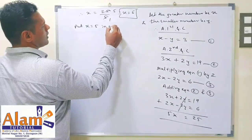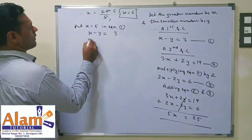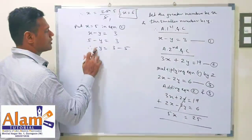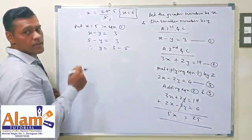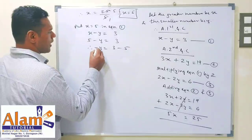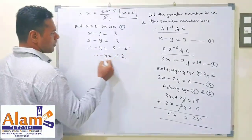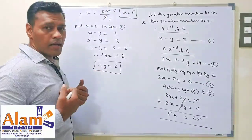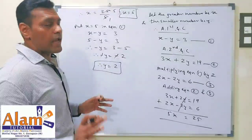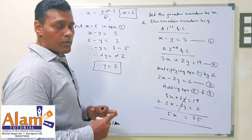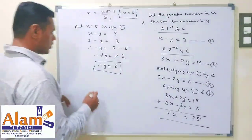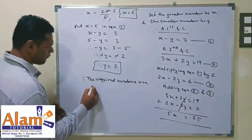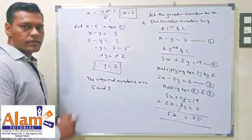Now put x equal to 5 in equation 1. So 5 minus y equals 3, therefore minus y equals 3 minus 5, which is minus 2. The negatives cancel, so y is equal to 2. Since this is a word problem, we state the answer properly: the greater number is 5 and the smaller number is 2.